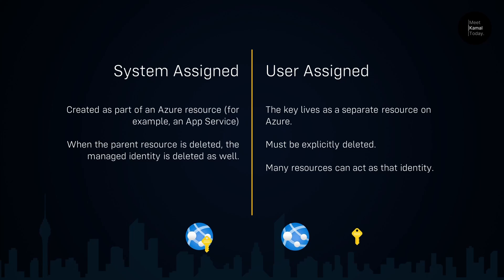As I said earlier, these identities are just like users in Azure Active Directory. The type is application. These identities are stored as an Azure Active Directory object. When you create a managed identity, it is stored in Azure Active Directory. The main difference between these two types is that when you create a system-assigned identity, the identity is attached to the Azure resource. In system-assigned managed identities, if the parent resource is deleted, the managed identity is deleted as well. With user-assigned managed identities, the Active Directory object lives separately from the Azure resource.